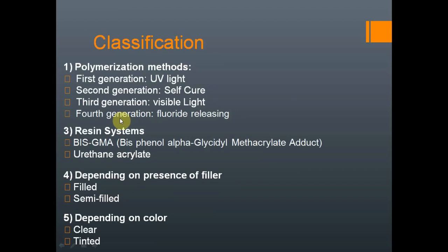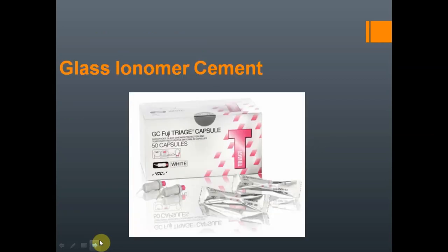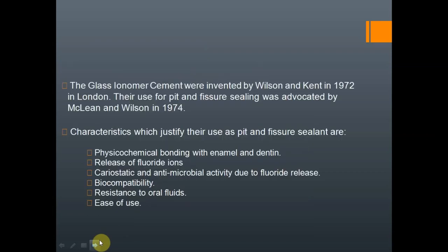There are various classifications of pit and fissure sealants based on polymerization: first generation (UV light-cured), second generation (self-cured), third generation (visible light-cured), and fourth generation (fluoride-releasing). Most commonly, we use first-generation resin systems based on BIS-GMA and urethane acrylate. Depending on filler content, they may be filled or semi-filled, and based on color, they are available as clear or tinted.